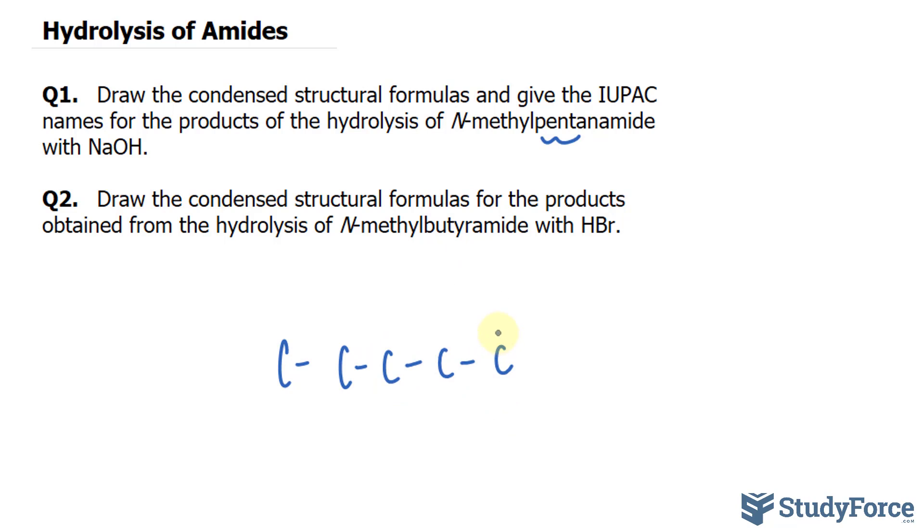The last carbon will have the carbonyl group. We have CH3, CH2, CH2, CH2. And bonded to this carbon is the amine part. This is called an amide bond right here.